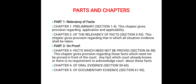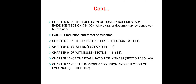Part 2 contains four chapters: Chapters 3, 4, 5, and 6. Chapter 3 deals with certain facts that need not be proved — these are notorious facts known to everybody of which the court takes judicial notice. Chapter 4 deals with oral evidence. Chapter 5 deals with documentary evidence, covering sections 61 to 90. Chapter 6 lays down the rules regarding the exclusion of oral or documentary evidence.